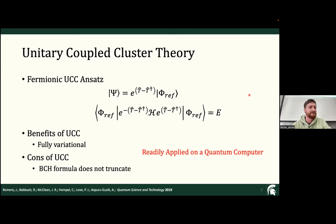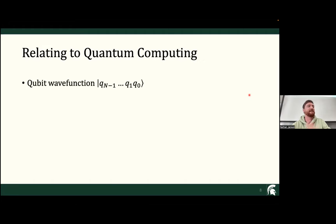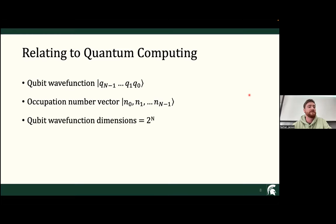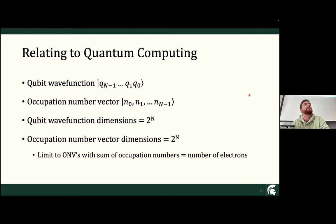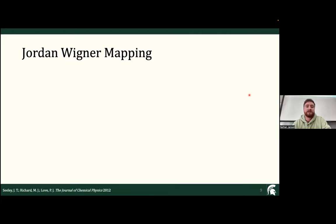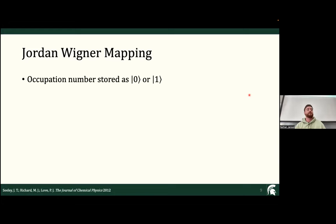Conveniently, we can readily apply UCC on a quantum computer. Let's relate the two at face value. The qubit wave function has dimensionality 2-to-the-n, and the same is true for our occupation number vectors — considering we're limiting to the number of electrons in the vector. So at face value, mapping the wave function one-to-one seems to work. What we need to do is construct the operators to build the wave function and create these cluster operators.